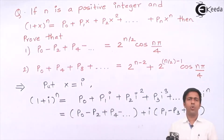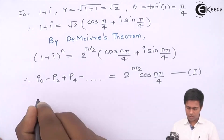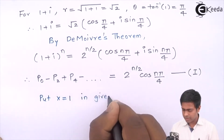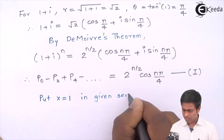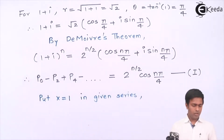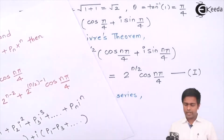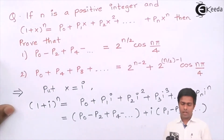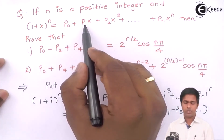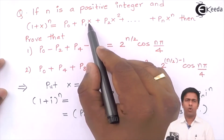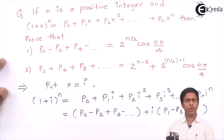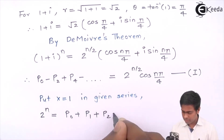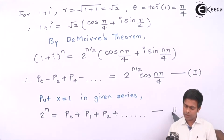First, put x = 1 in the given series. We get: (1 + 1)^n = 2^n = p0 + p1 + p2 + p3 + ... (since all powers of 1 are 1, all terms appear with positive signs). We'll call this Equation 2.